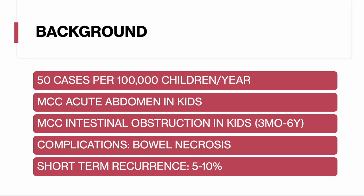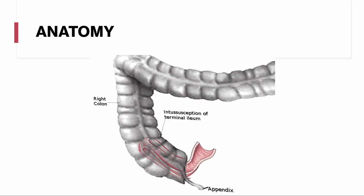There are about 50 cases per 100,000 children per year. It is the most common cause of acute abdomen and intestinal obstruction in children. Complications include bowel necrosis, and there is a short-term recurrence rate of about five to ten percent, so if a child presents after a recent diagnosis, keep this in mind. If there is any evidence of bowel necrosis, a surgeon must be involved; otherwise, an aerobarium enema may be appropriate. The most common type is ileocolic intussusception, where the small bowel invaginates into the colon — seen more than 70% of the time. Enteroenteric and colicolic intussusception can also occur.